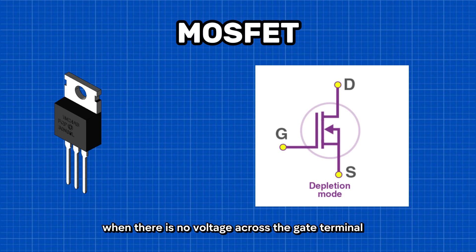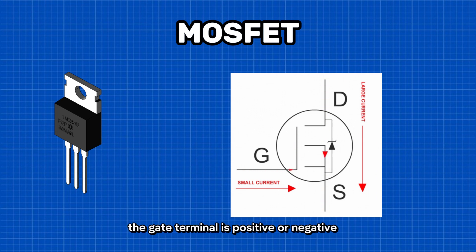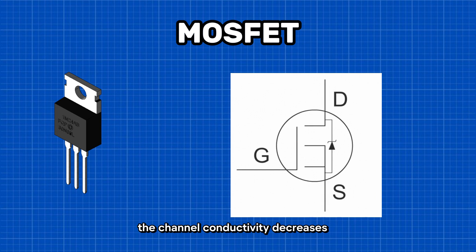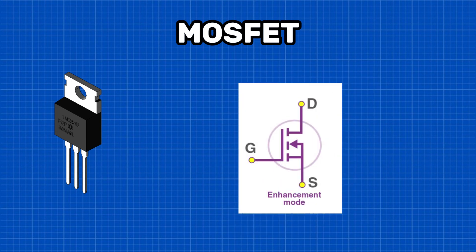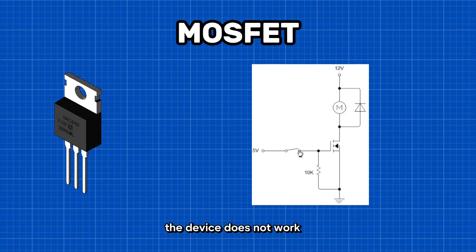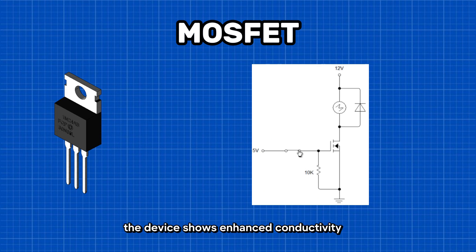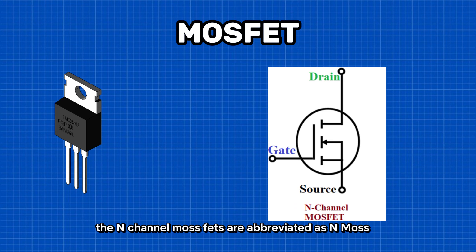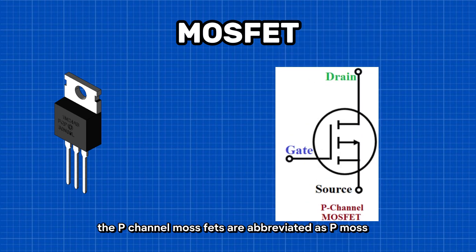In depletion mode, when there is no voltage across the gate terminal, the channel shows maximum conductance. When the voltage across the gate terminal is positive or negative, the channel conductivity decreases. Two: enhancement mode. When there is no voltage across the gate terminal, the device does not work. When there is a maximum voltage across the gate terminal, the device shows enhanced conductivity. The N-channel MOSFETs are abbreviated as NMOS and are symbolically represented as shown. Similarly, the P-channel MOSFETs are abbreviated as PMOS and are symbolically represented.